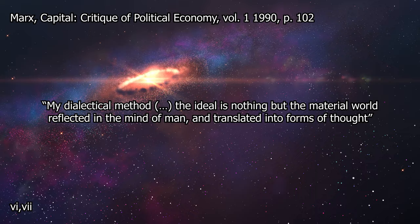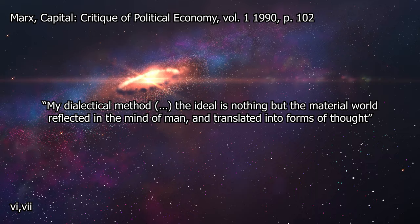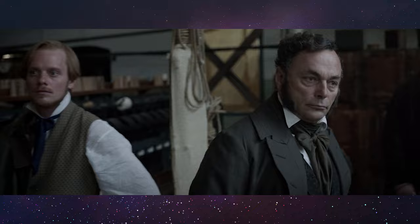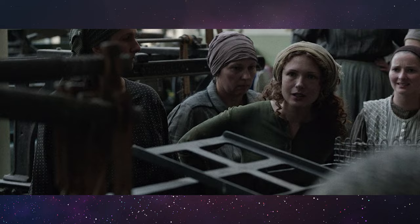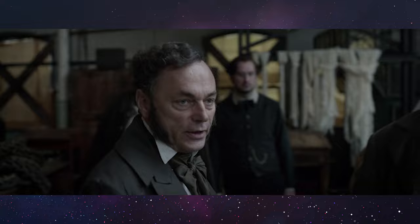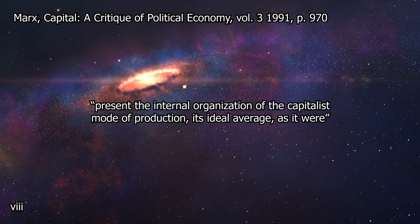This is why Marx writes that in my dialectical method, the ideal is nothing but the material world reflected in the mind of man and translated into forms of thought. Marx's political economy is a model of one important component of modern society, the capital relation defining the capitalist mode of production. Since all particular capitalisms vary according to their natural, social and historical contexts, Marx doesn't set out to model, in full and complete detail, the specific capitalism of any one particular society, but rather to present the internal organization of the capitalist mode of production, its ideal average, as it were.